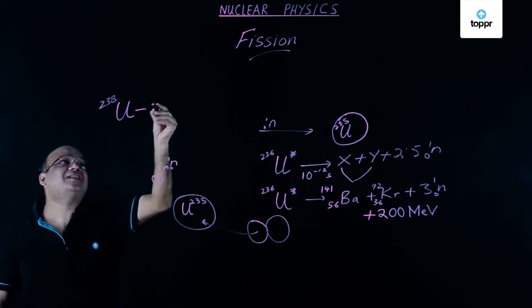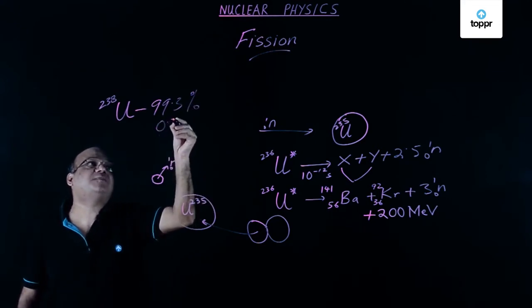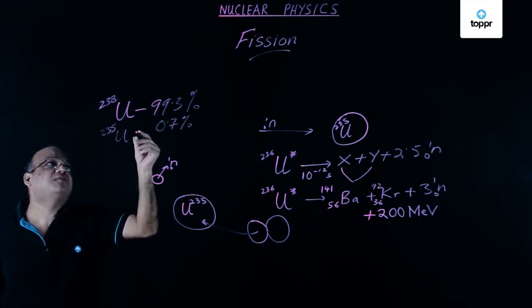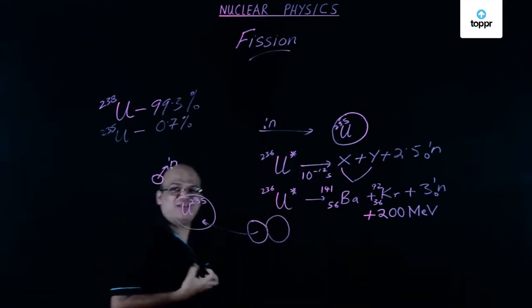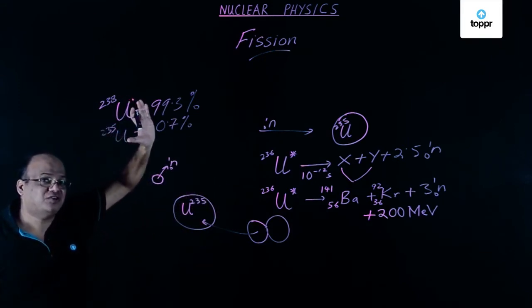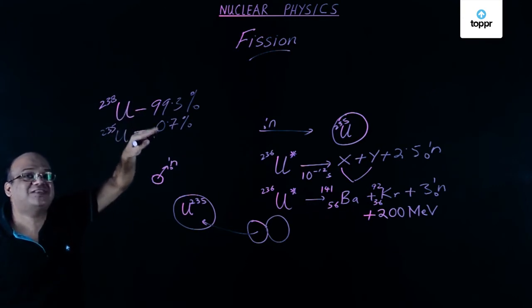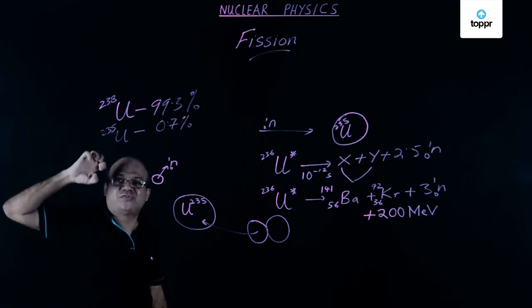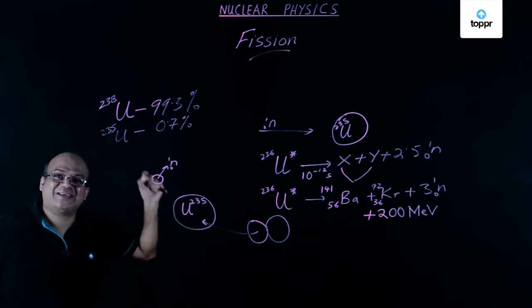Remember that in nature, 99.3% of uranium is U-238 and only 0.7% is U-235. U-235 undergoes fission with slow neutrons. Plutonium-239 also undergoes fission with slow neutrons. U-238 requires fast neutrons. For an atom bomb you need U-235, and separation of these two isotopes is not easy because chemically you cannot separate them — they have the same chemical properties. You have to use physical techniques, and that is where the real technology lies.